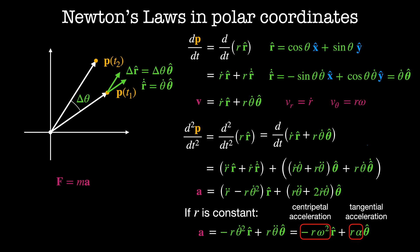Since the force acting on a particle causes it to accelerate proportionately to its inertial mass m, we can express the radial force as m times (r-double-dot minus r times theta-dot-squared). And the angular force is m times (r·theta-double-dot plus 2 times r-dot times theta-dot).